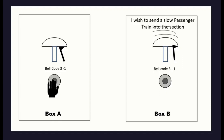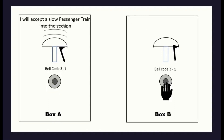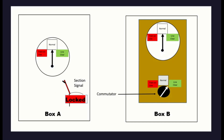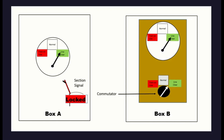These codes vary, but let's say that he presses the bell push three times, short gap, then once more to send a code 3-1, indicating that the train is a slow passenger train — in other words, a stopping train. The bell code is received at box B, and if the signaller at box B wishes to allow this train into the section, then the bell push is repeated back to box A. The signaller at box B will now turn the commutator to line clear, and the indicators at both box A and box B will turn to line clear.